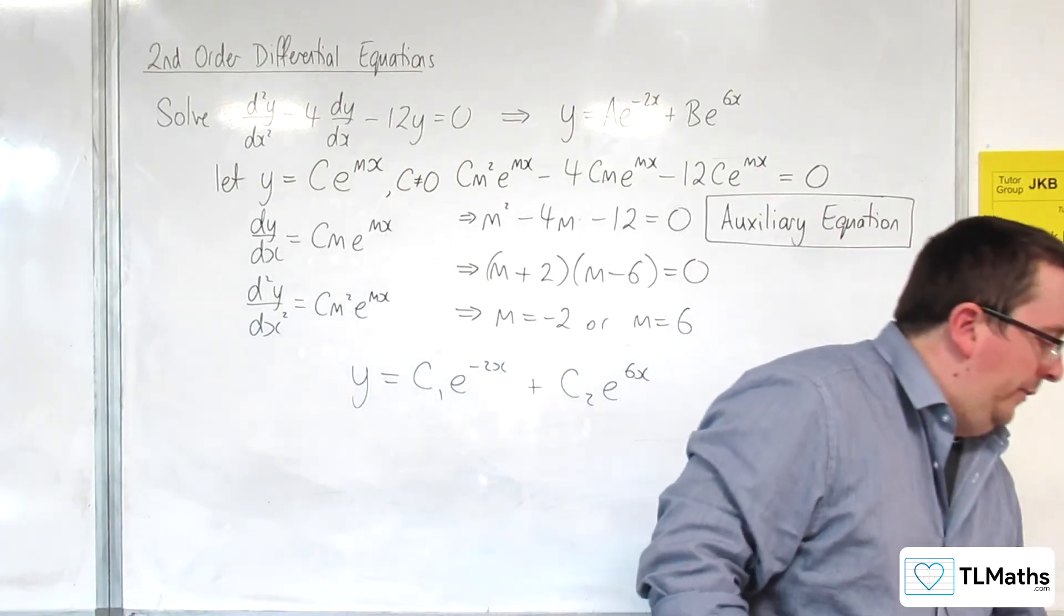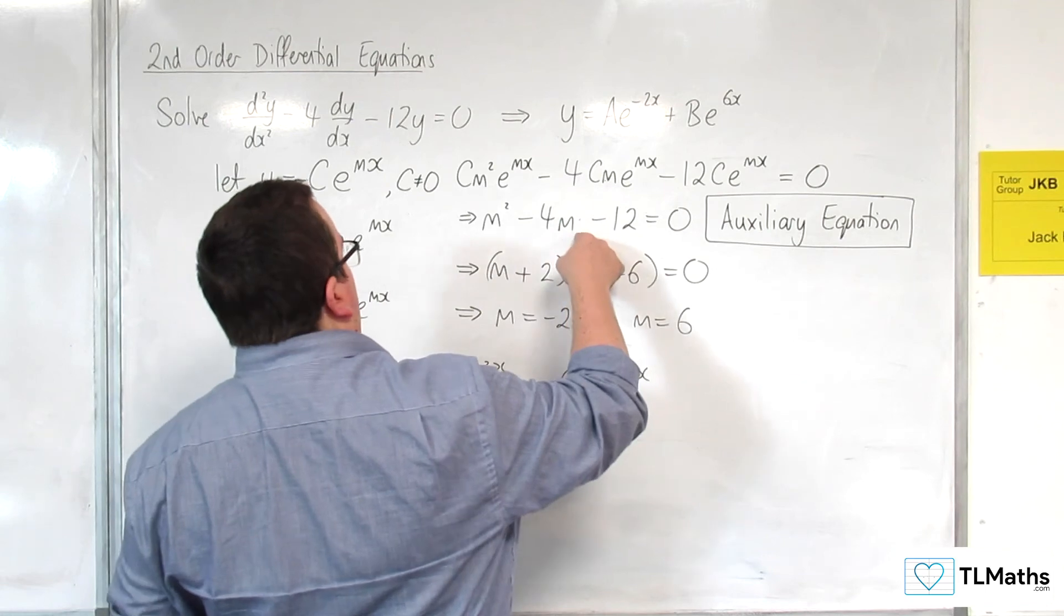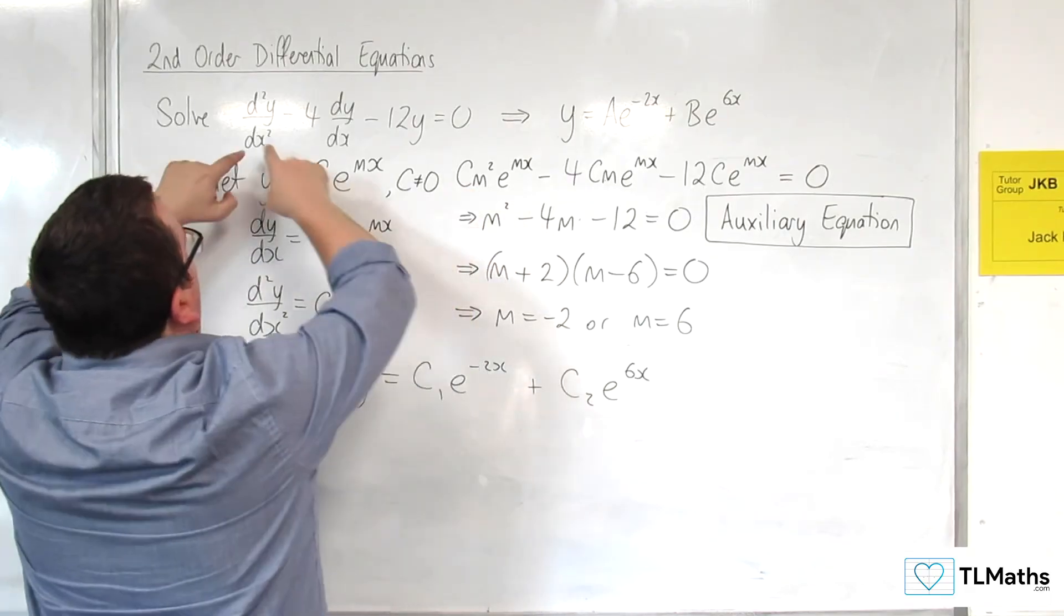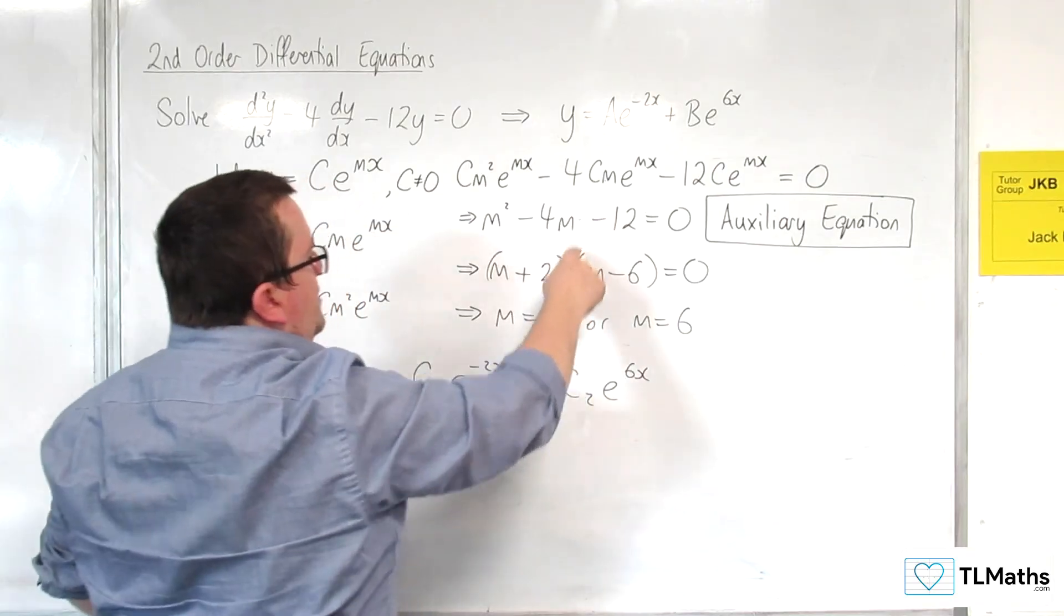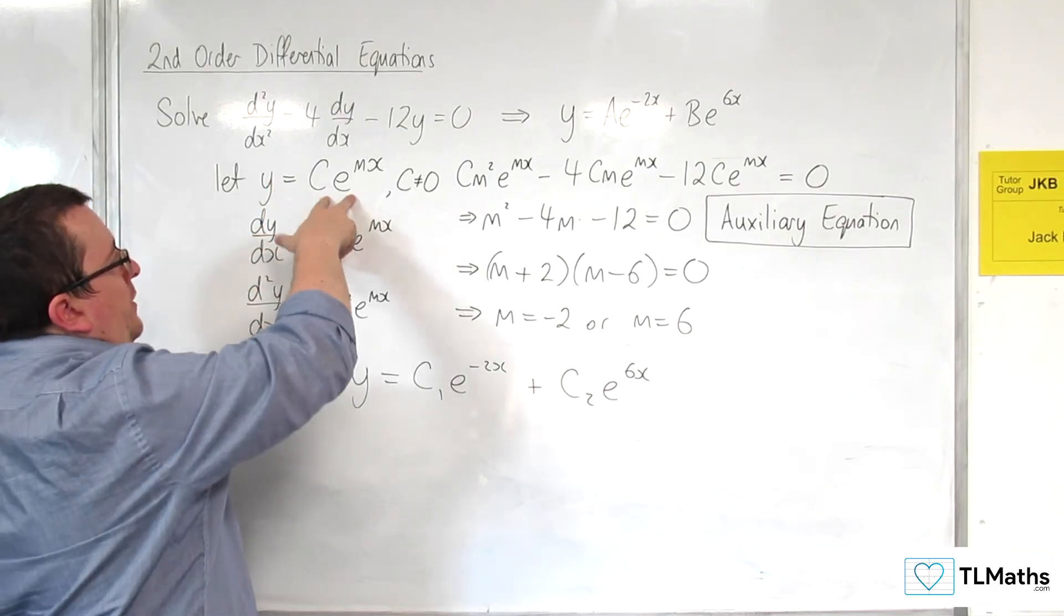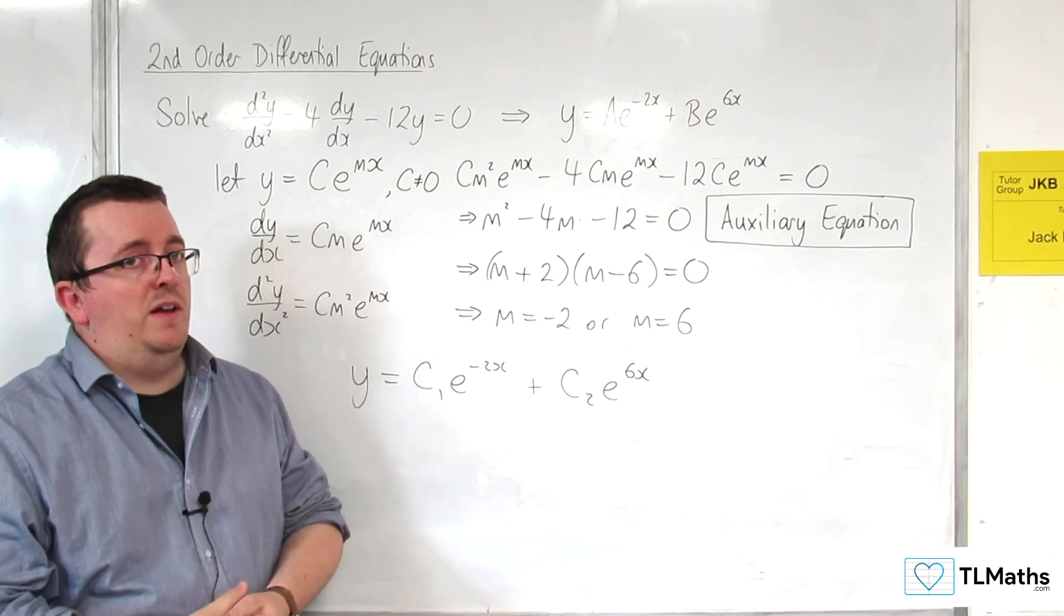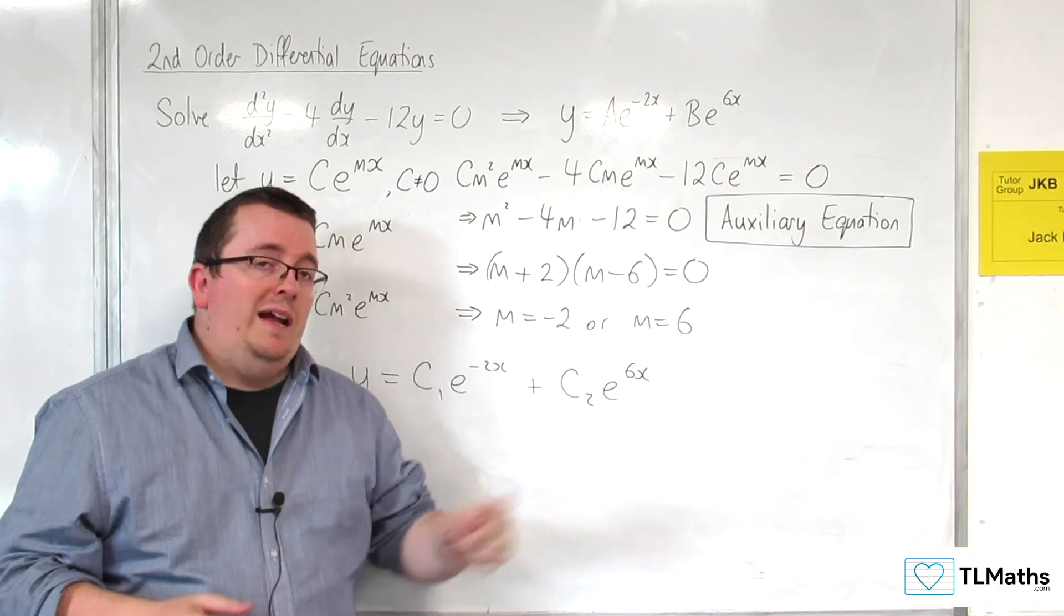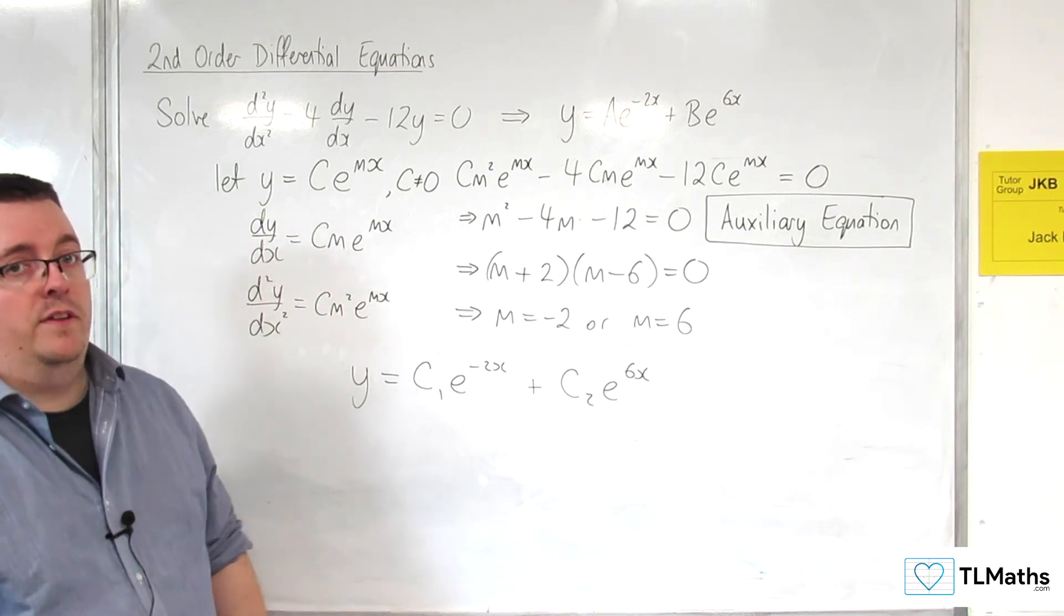So the plan is, given a second order differential equation, I go straight to the auxiliary equation. I can read it straight off: m² - 4m - 12 = 0. I solve the quadratic, get my two solutions, and substitute them into this, and then I've got the answer I need. That's going to be the quick method we're going to use. Now we're going to hit problems when we don't have two distinct real roots. I'm going to show how we deal with those in the coming videos.